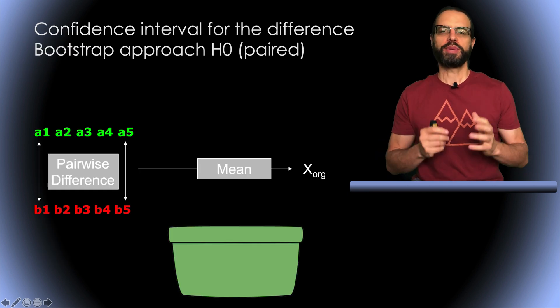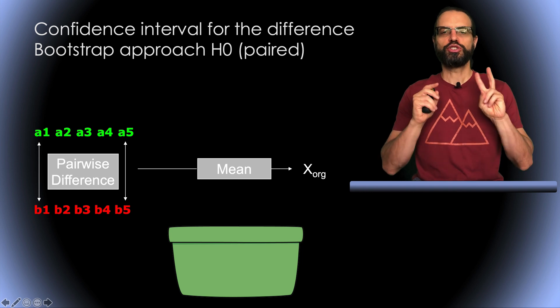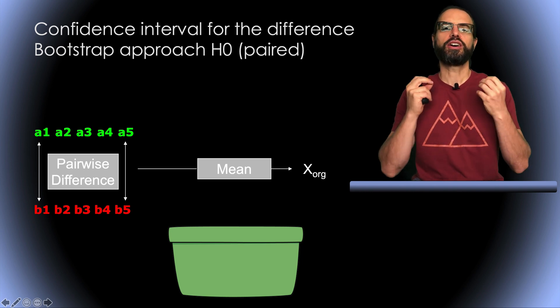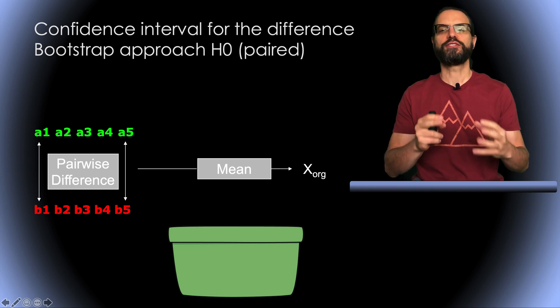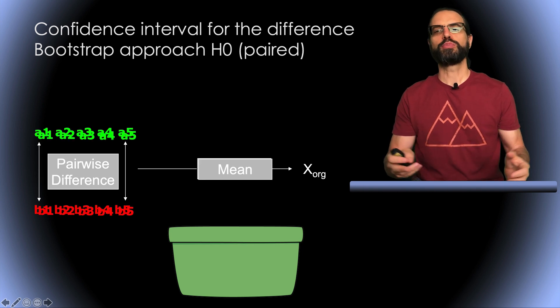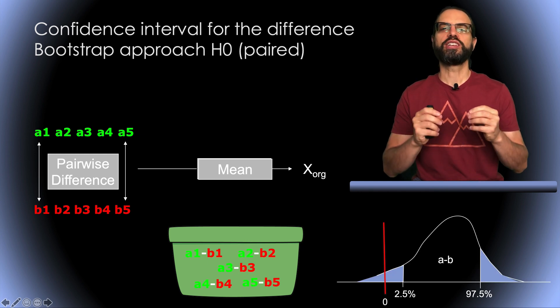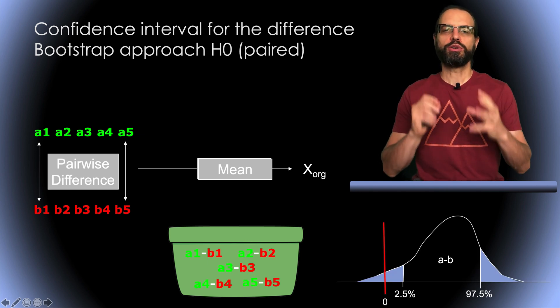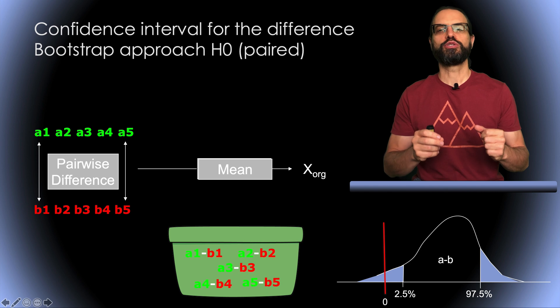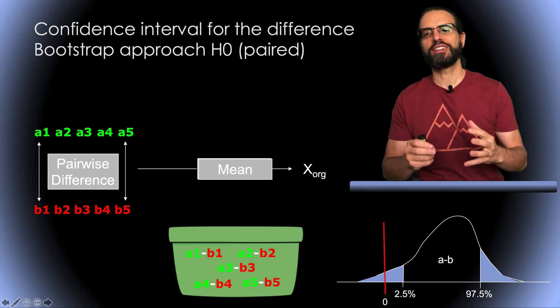We've already talked about bootstrap when comparing two paired conditions. Under the null hypothesis, we assume that the difference is close to zero. So we can put all the pairwise differences in the bucket and randomly draw from that bucket to build the difference distribution. If zero lies in the tail, then we can conclude that the two conditions are significantly different.